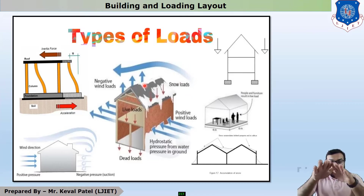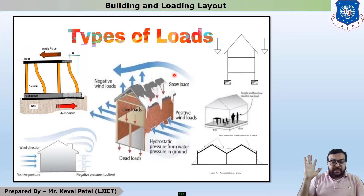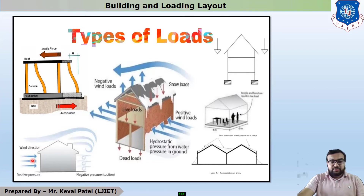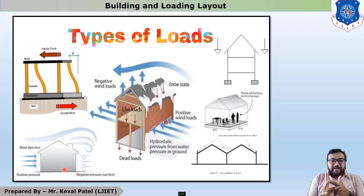The third load is snow load, which is generally acting on the hilly region area on the roof — snow load is generally considered in the downward direction. You can also see that this is wind load, and with the increasing in height the capacity of wind load is increased. So the main loads are: dead load, live load, wind load, earthquake load, and snow load.